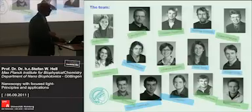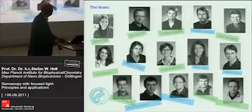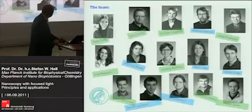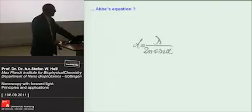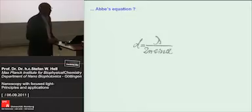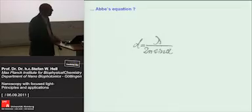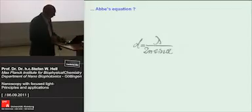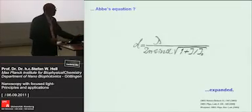I acknowledge the PhD students and postdocs who contributed to this development. I highlight Stefan Jakobs in particular for his many contributions to developing and using reversible switchable proteins. Now, coming to my final slide: the Abbe equation clearly no longer holds. We can discern features closer than what it predicts. We modify it by plugging in the square root factor 1 + I/IS to account for the new situation.